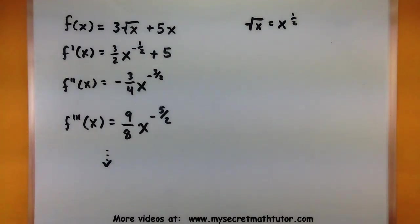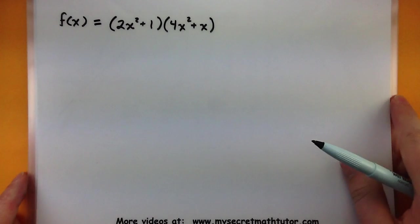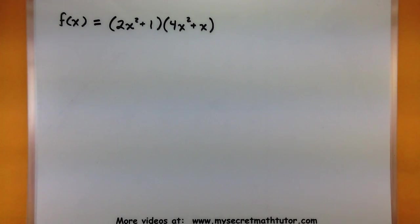Alright, so that's pretty neat. Let's go ahead and try our higher derivatives on one more example. Let's throw in a product rule. In this one, I want to find a couple of derivatives for (2x squared plus 1) multiplied by (4x squared plus x).